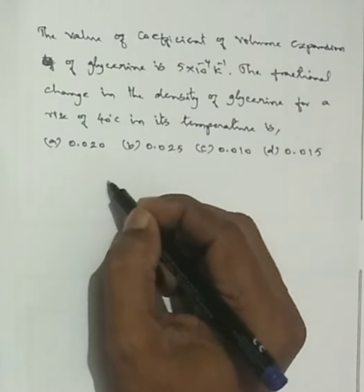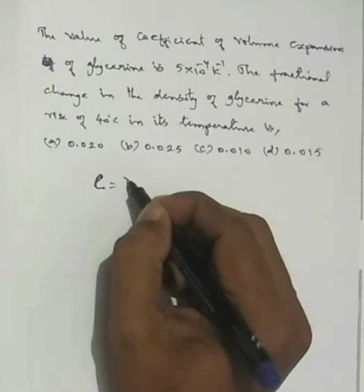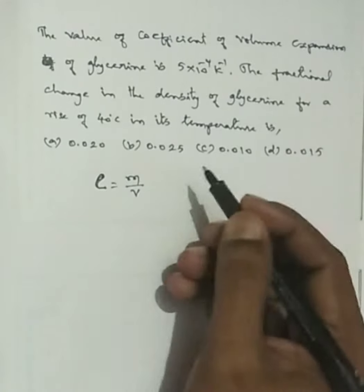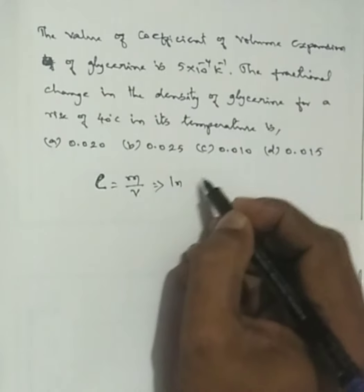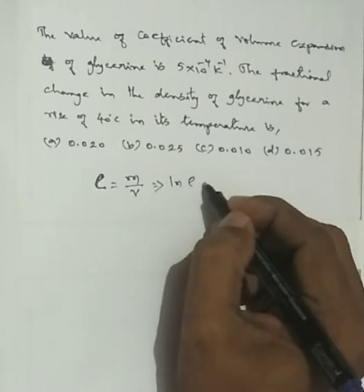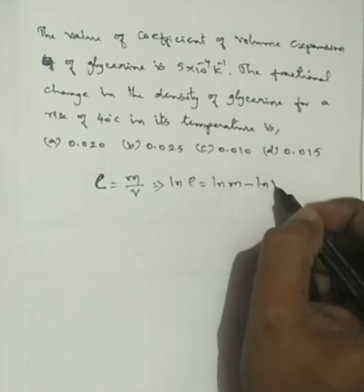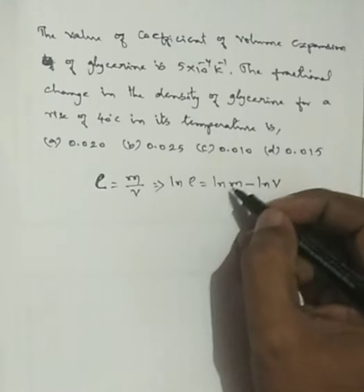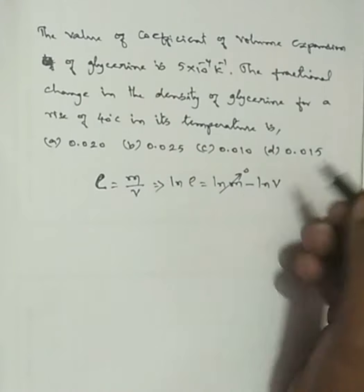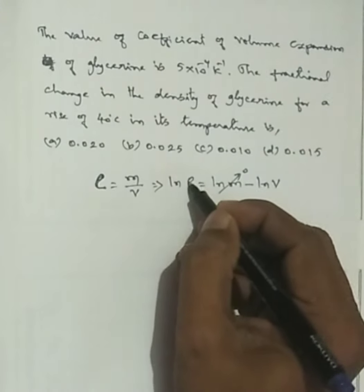Density rho is equal to mass divided by volume. Taking the natural log: ln(rho) equals ln(mass) minus ln(volume). Since mass is constant, the change in ln(mass) is zero, so we are left with ln(rho).